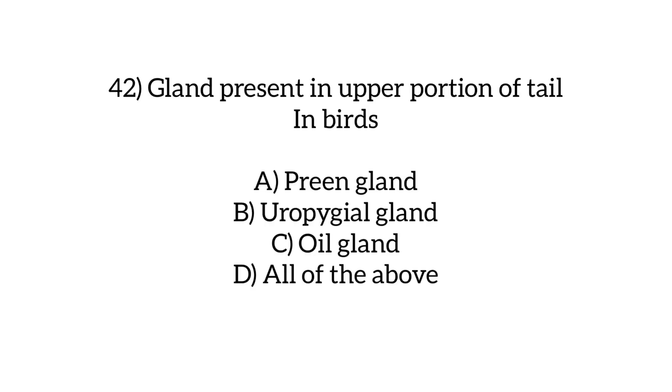The gland present in the upper portion of the tail in birds is: Preen gland, uropygial gland, oil gland, or all of the above. Option D: all of the above.